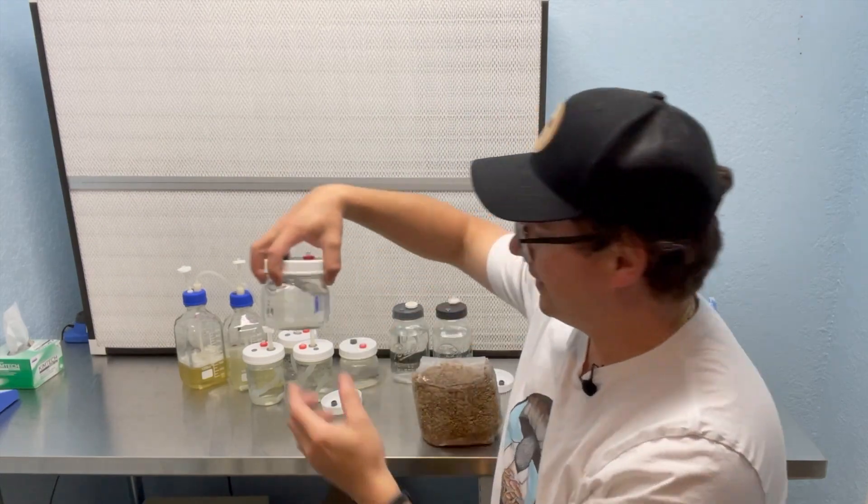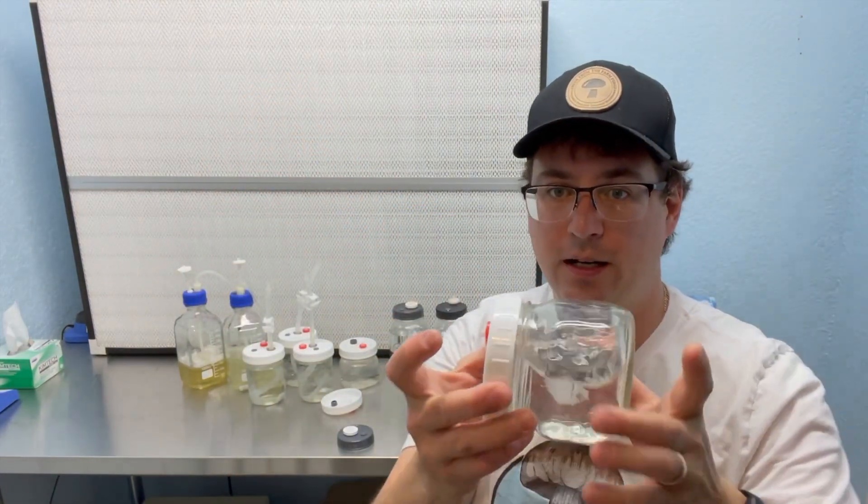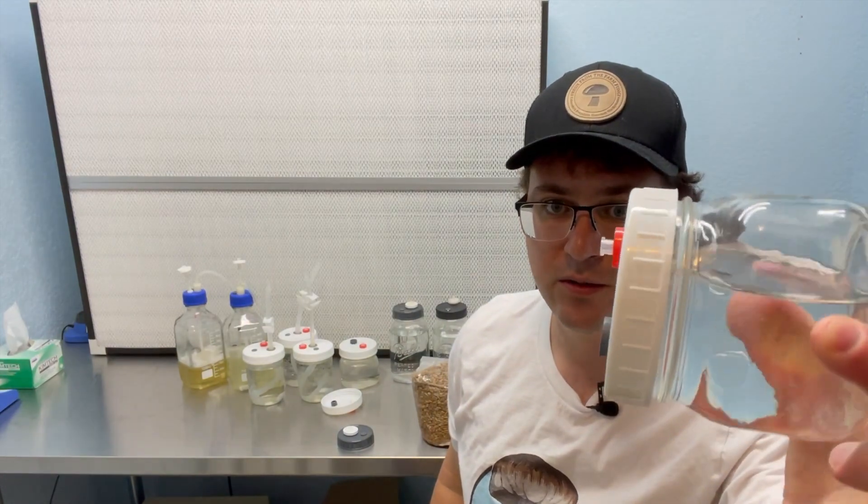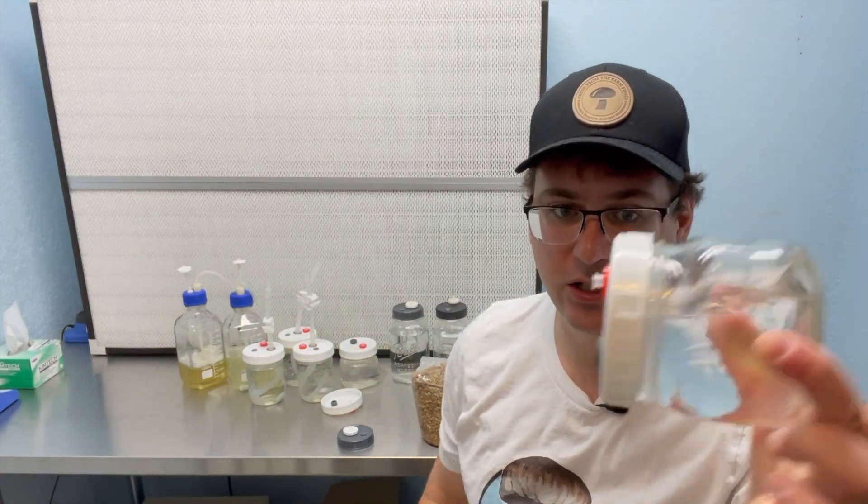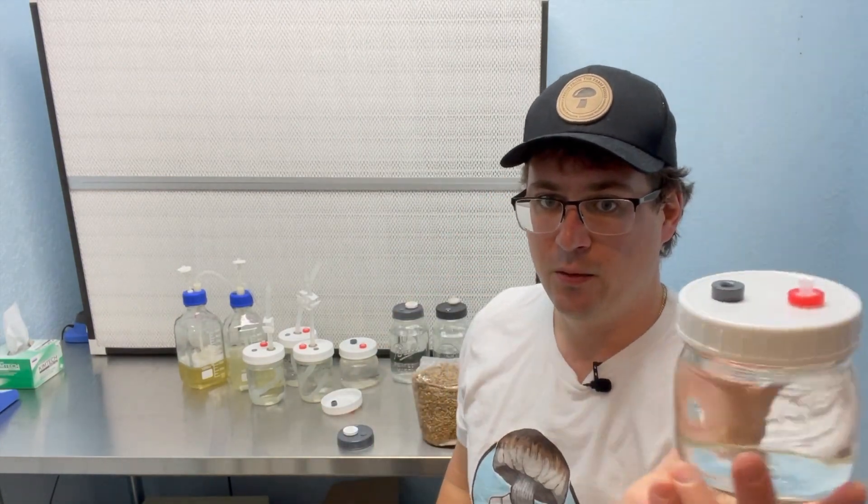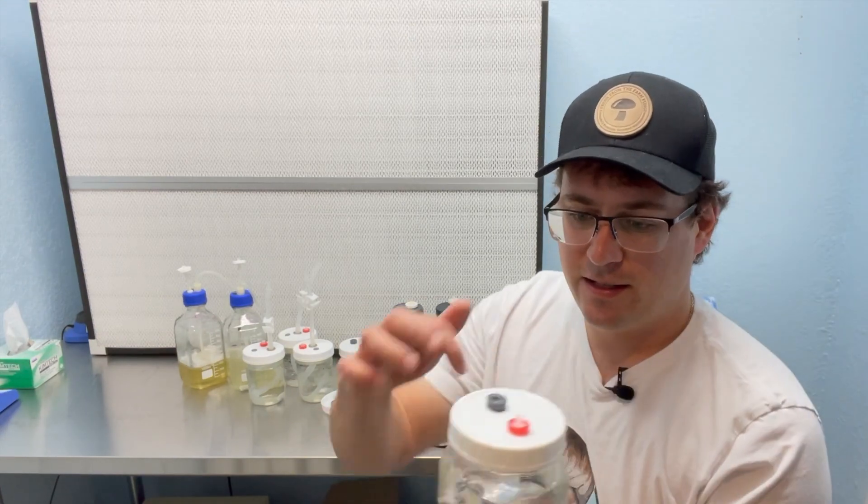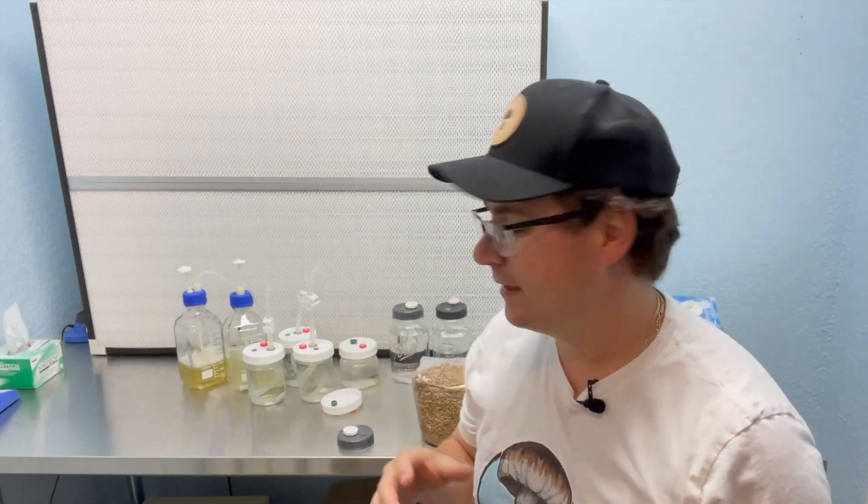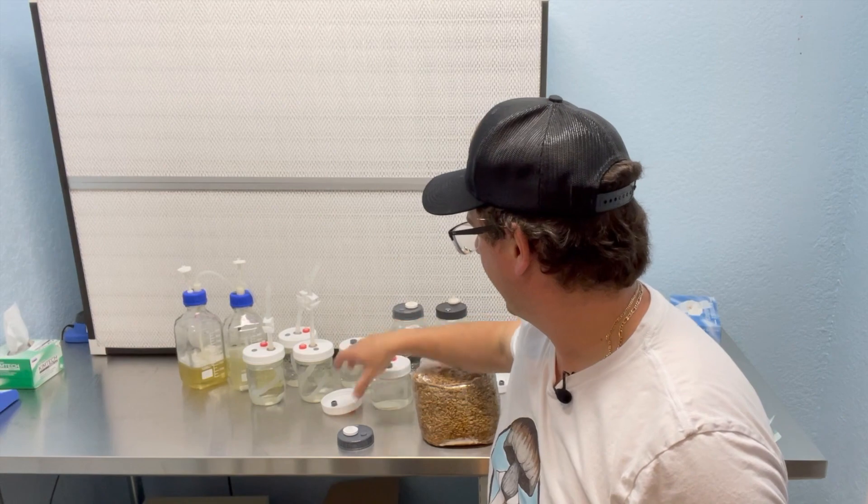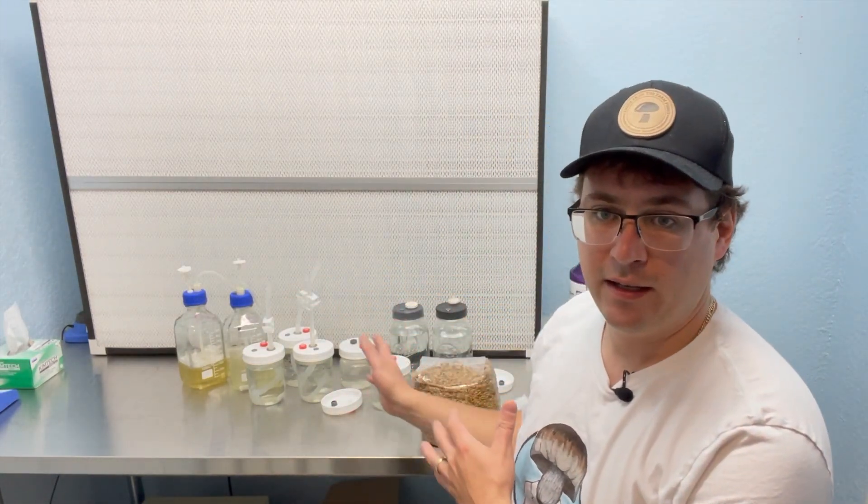That fits really nicely on the lid, and that's nice because it creates a really good seal. So when you're making your spore syringes or when you're pulling your liquid culture, you don't have to worry about dripping around the edge, which is often a problem when you're using these Ball jars. The top can get kind of grimy, so that's a really nice upgrade. I like the little gasket on there.